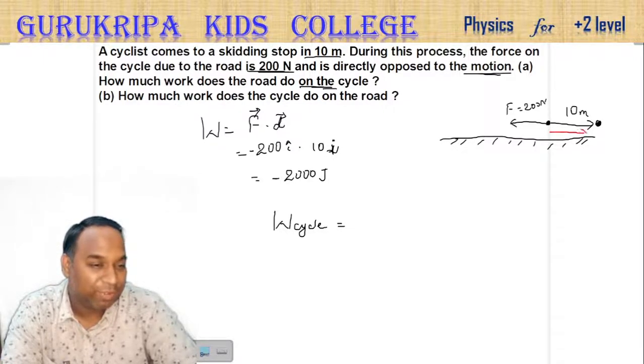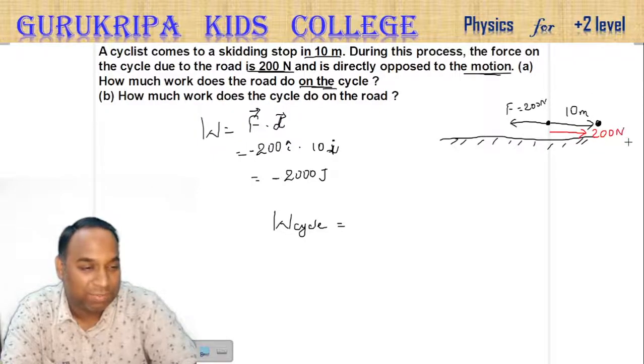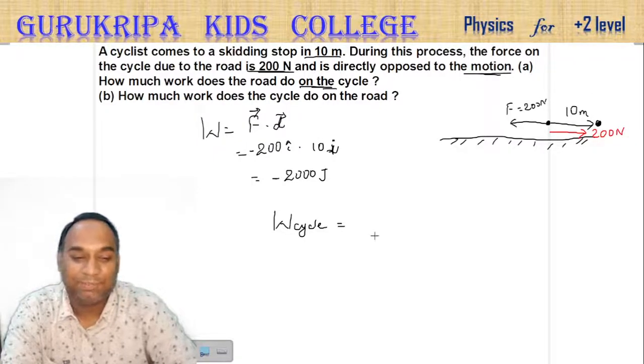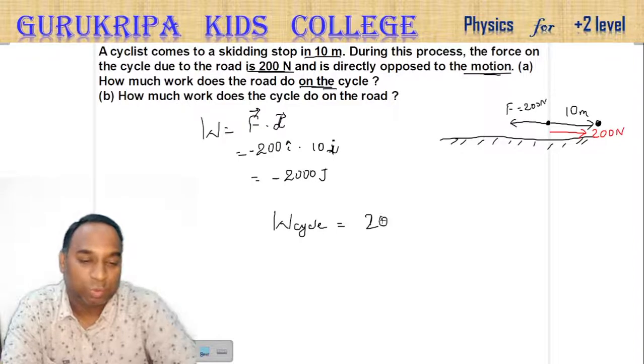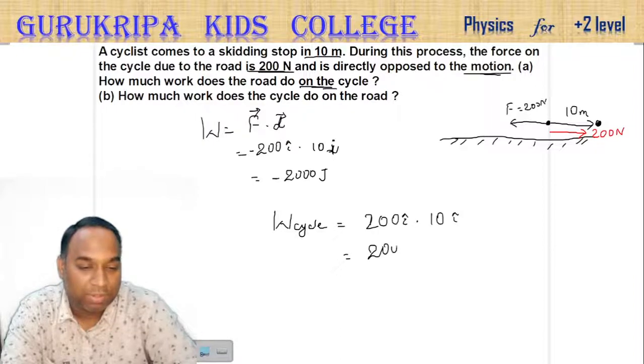By Newton's third law, every action has an equal and opposite reaction. 200 newtons i cap dot product with 10 meters i cap, that is equal to positive 2000 joules.